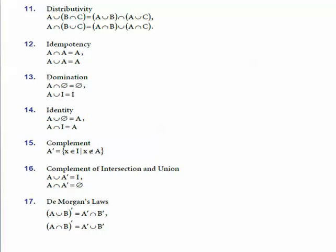Complement of intersection and union: A union A' gives I, and A intersection A' gives null set. De Morgan's law states that the complement of A union B gives A complement intersection B complement, and the complement of A intersection B gives A complement union B complement.